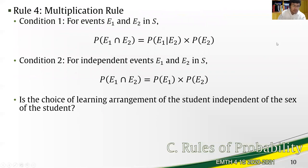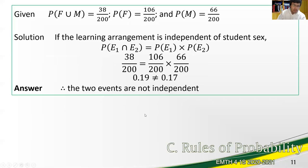The fourth rule is multiplication rule where two conditions are again considered for dependent events and independent events. For the first condition, it would be the probability of E1 given E2 multiplied by the probability of E2. For independent events, we have merely the probabilities of E1 and E2 multiplied together. Let us see this through an example. Is the choice of learning arrangement of the student independent of the sex of the student?